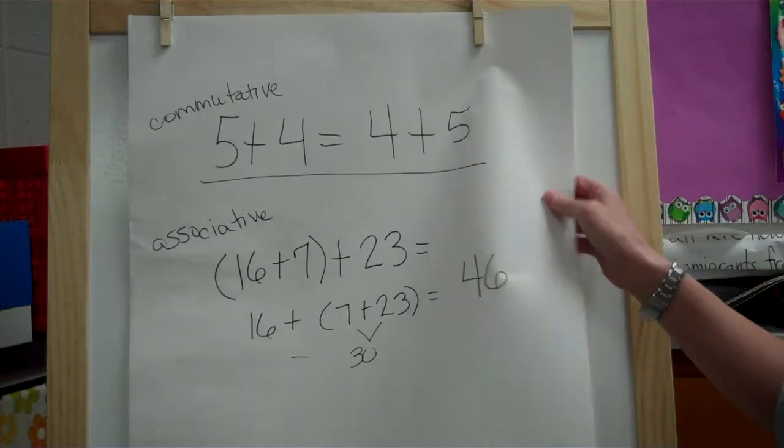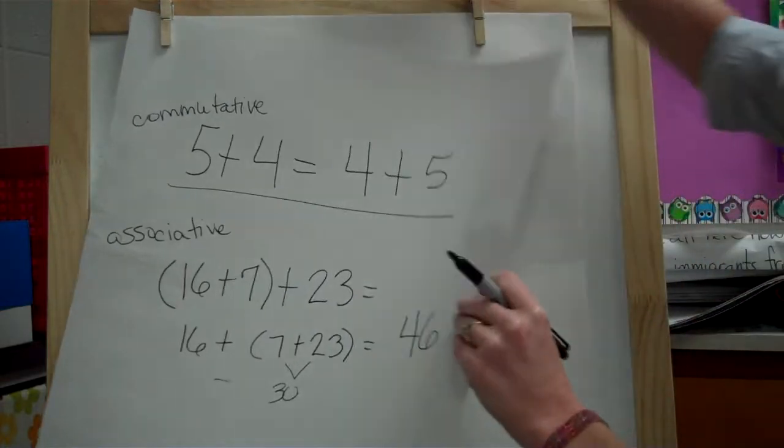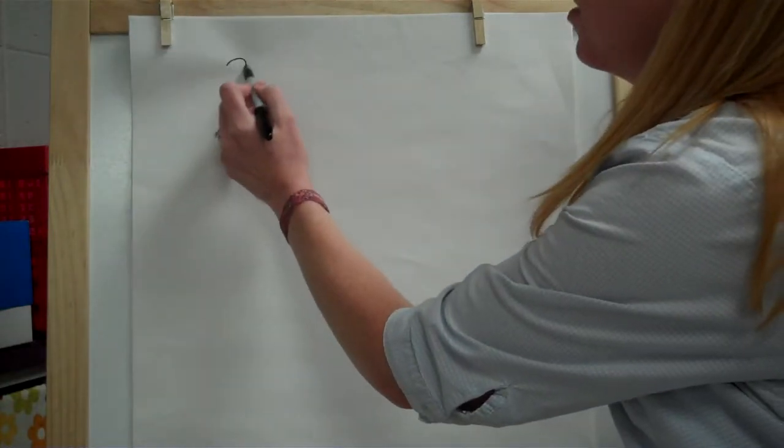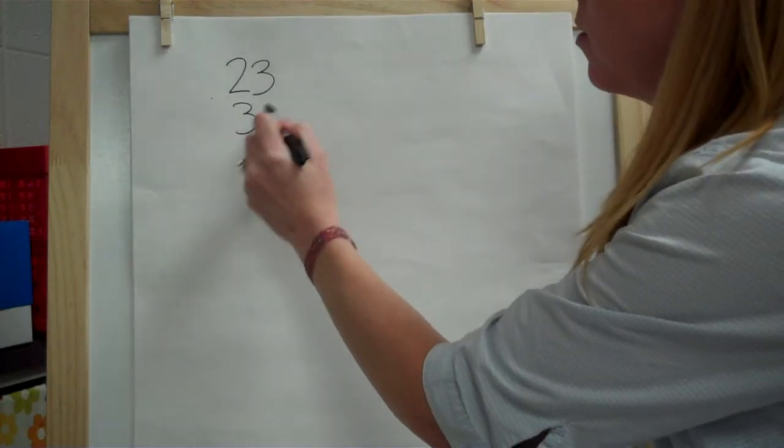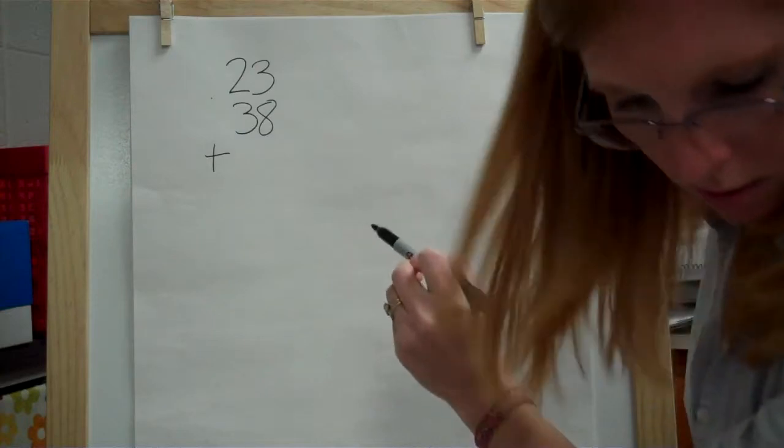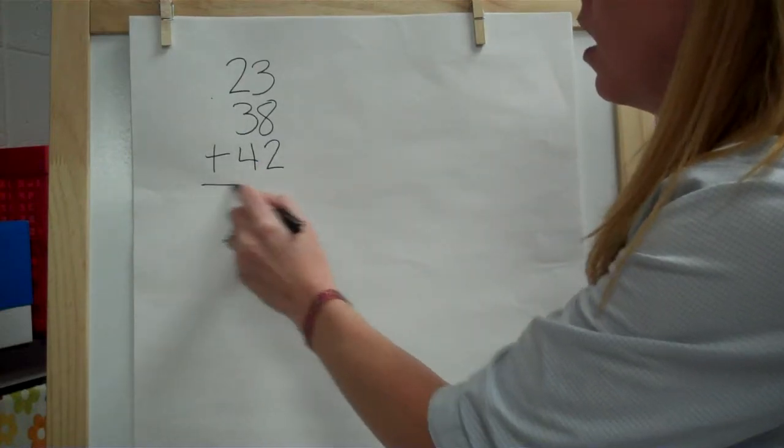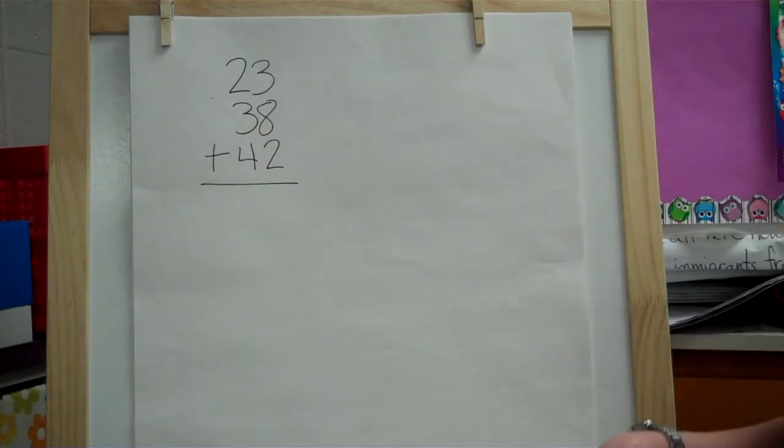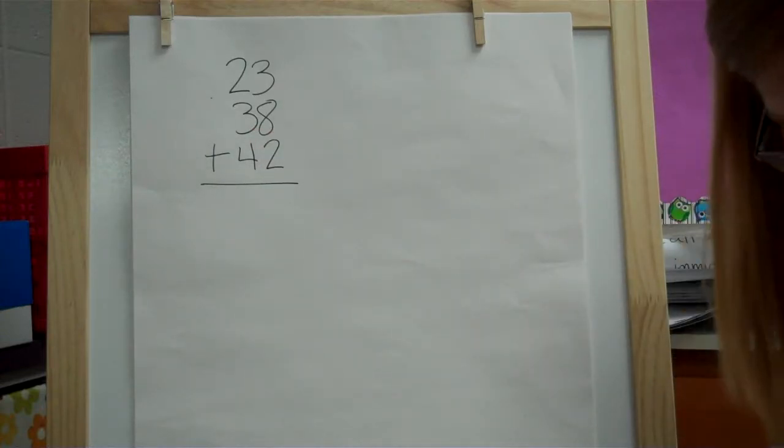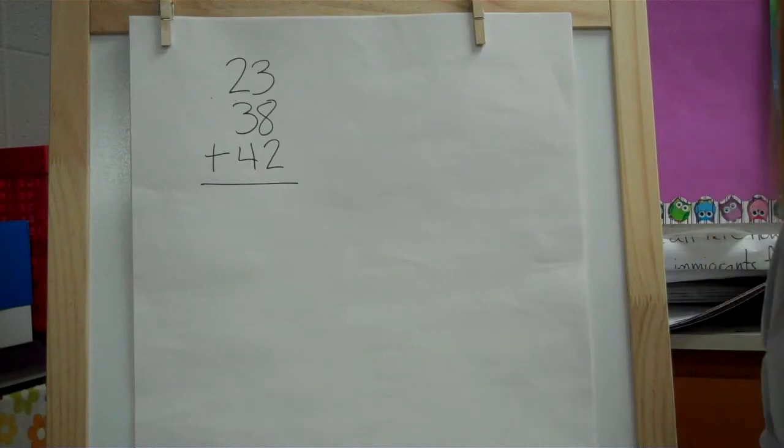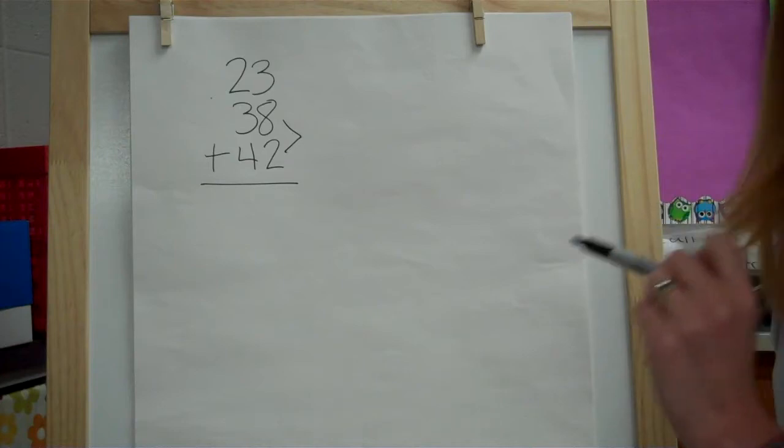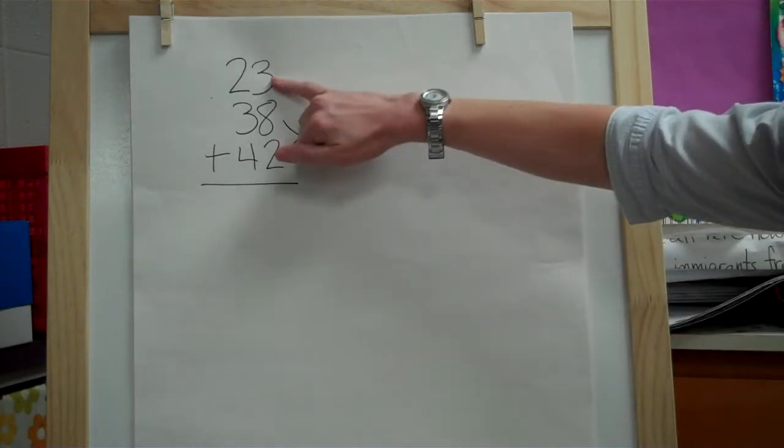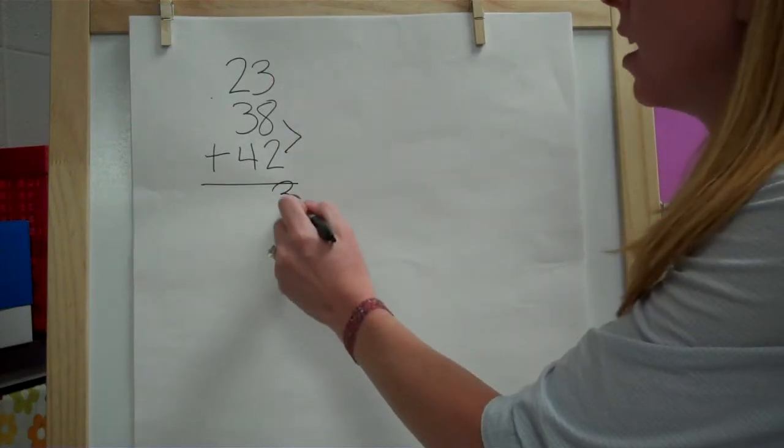The first problem we're going to do today is 23 plus 38 plus 42. Now we're going to look at those in our ones columns here first to see if any of them are easy to add. And two of those numbers jump right out at me, this 8 and 2. If you add those together, that makes a 10. So we've got 8 and 2 is 10 plus 13. So we can add that really quickly.